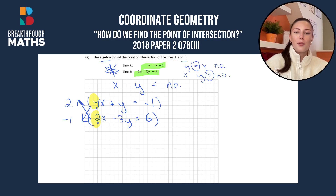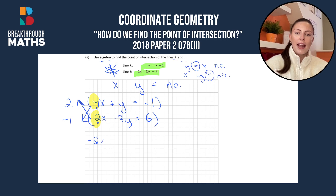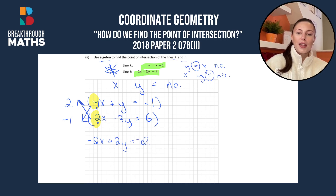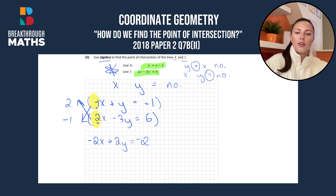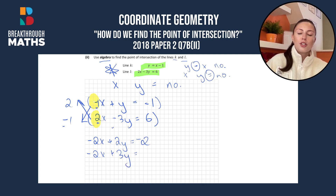Multiplying 2 into the first line gives us -2x + 2y = -2. Then on the second line, multiplying -1 into everything gives us -2x. Then minus times minus gives us +3y, equals 6 times -1, which is -6.